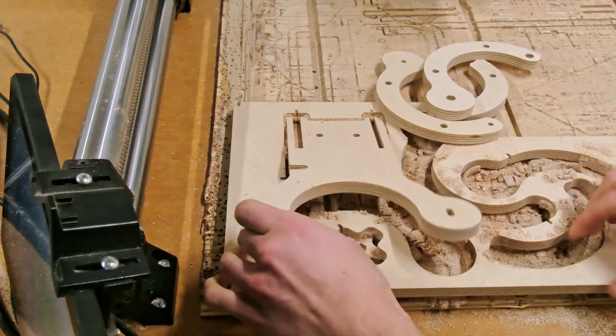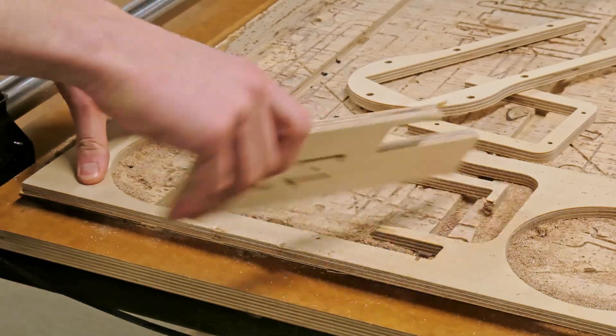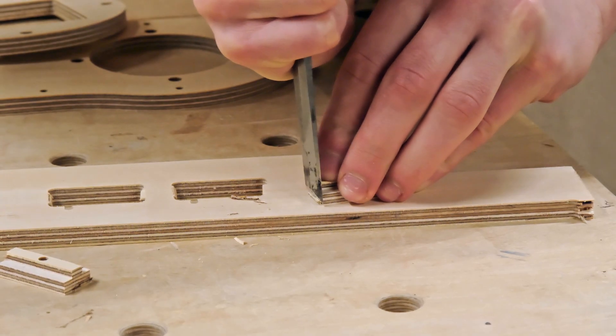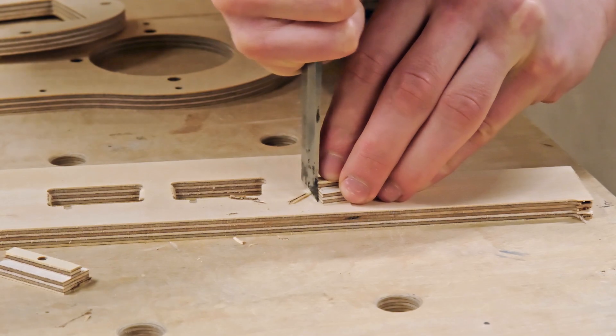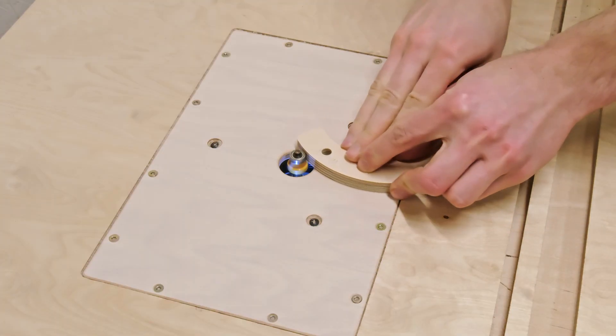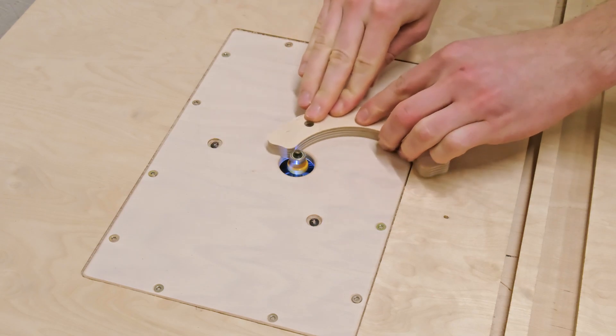However, removing the small mounting parts requires breaking off the stock material and chiseling the support tabs. When the support tabs are removed, we can move on to the router table to trim the component edges and make the parts nicer to work with.